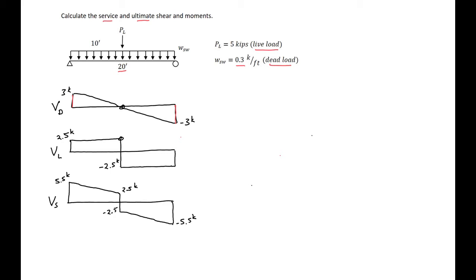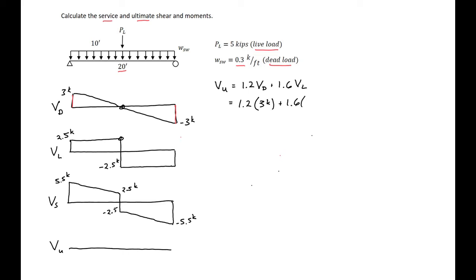We can now find our factored shear. The expression we'll use is: ultimate shear Vu equals 1.2 times dead load plus 1.6 times live load. At the beam ends: 1.2 times 3 kips plus 1.6 times 2.5 kips gives us Vu equal to 7.6 kips.